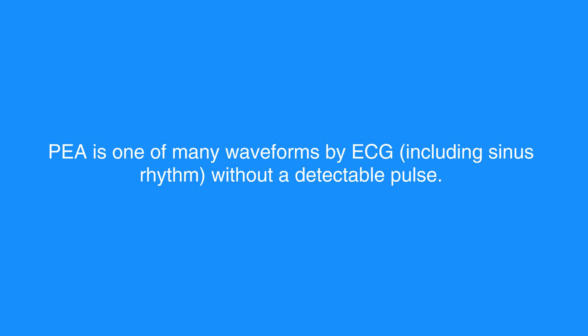PEA is one of many waveforms by ECG, including sinus rhythm, without a detectable pulse. PEA may include any pulseless waveform with the exception of VF, VT, or asystole.